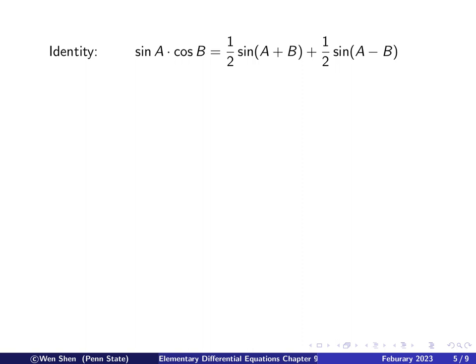Now let's recall a trig identity. In the solution we have a sine times cosine, and we try to rewrite it. We probably learned this in high school: sine(a) times cosine(b) equals half sine(a+b) plus half sine(a-b).